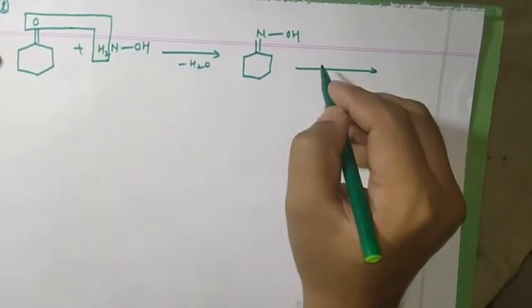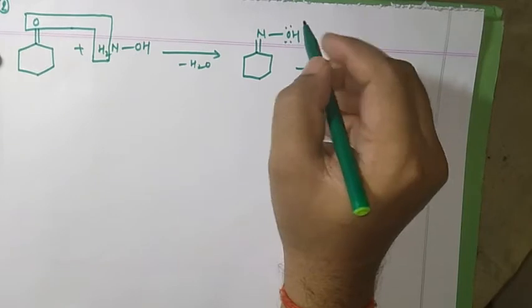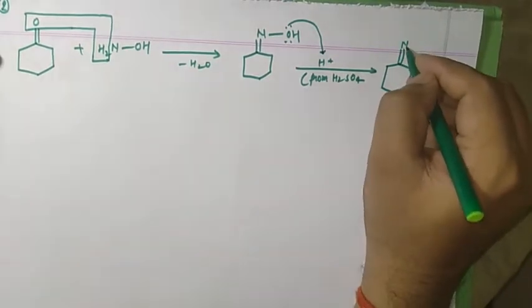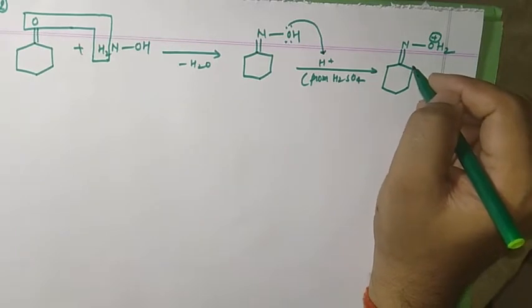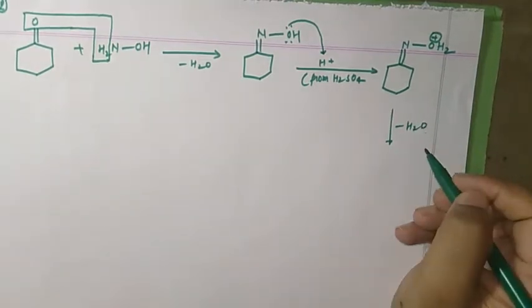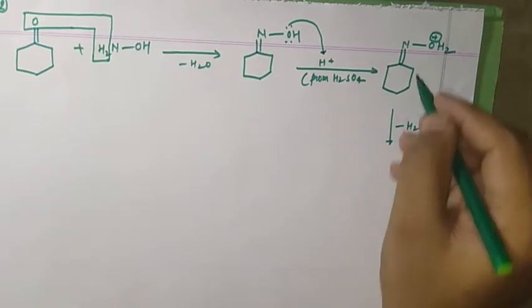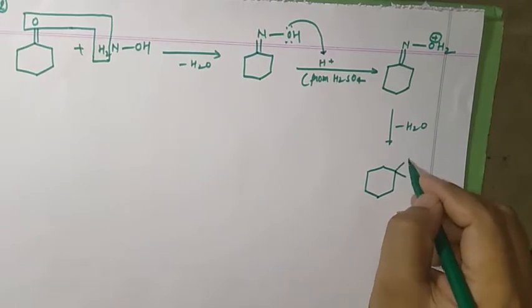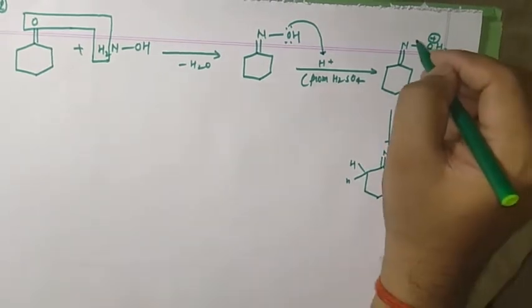Now, similar to before, if you take H+ from H2SO4, the lone pair electron on the oxygen attacks H+ giving the cyclic oxime with an OH2+ group and a positive charge. With loss of water (minus H2O), a cyclic nitrilium-type ion forms with a positive charge on nitrogen, and the C-C bond has to shift.